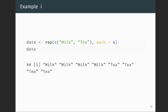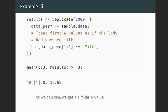So this is what I'm doing in the example here. So first, I'm creating the data set. And I'm just creating a vector with the first four values are milk, the last four values are tea. I'm creating this using the rep function and the each equals four argument.